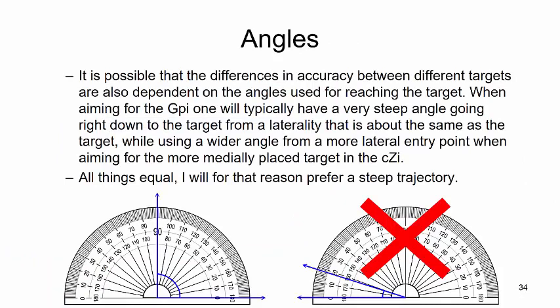It is also possible that the differences in accuracy between different targets is dependent on the angles used for reaching the target. When aiming for the GPI, one will typically have a very steep angle going right down to the target from a laterality that is about the same as the target, while using a wider angle from a more lateral entry point when aiming for the more medially placed target in the zona incerta. And all things equal, I will for that reason prefer to have a steep trajectory.